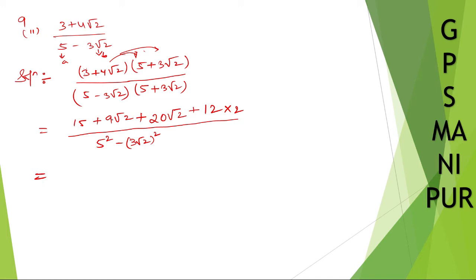15, 9 root 2, 20 root 2. 9 root 2 plus 20 root 2 will be 29 root 2. 15, 12 is 24. So 15 plus 24. Let me write this: 9 root 2 and 20 root 2, I can write as 29 root 2 divided by denominator 5 square, which is 25, minus 3 times 3 is 9.